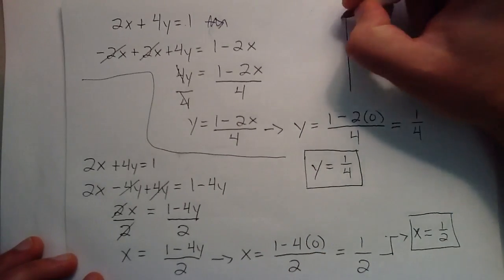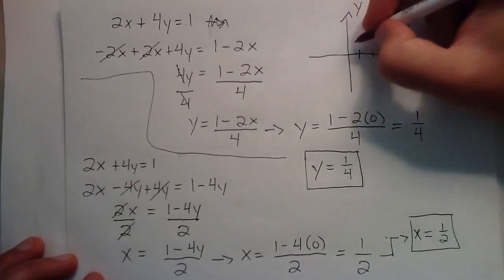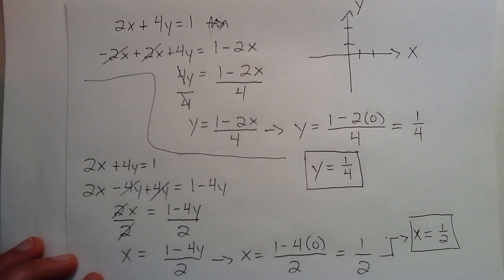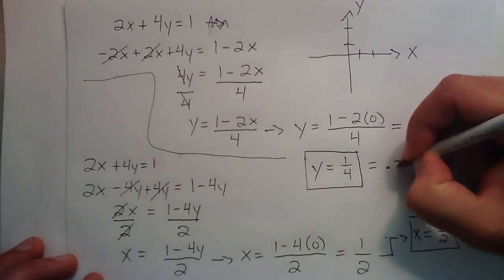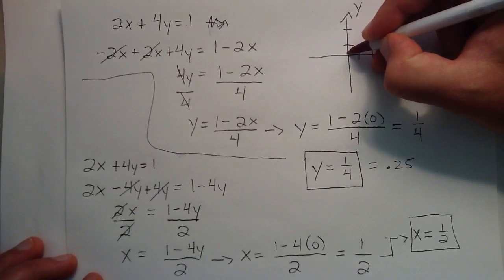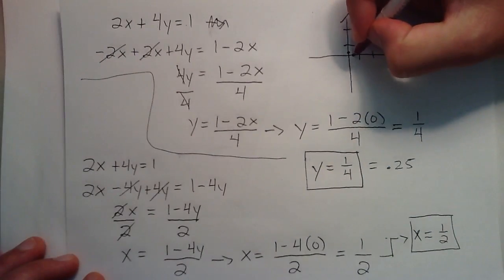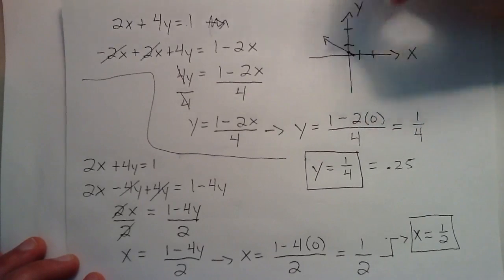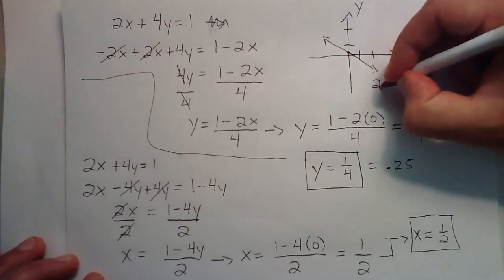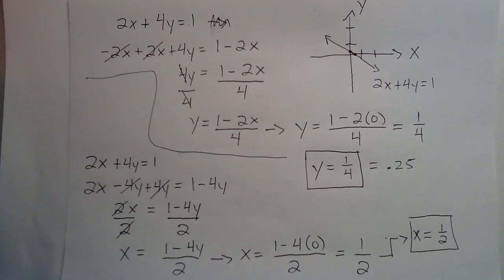To do a quick sketch: here's our y axis, here's our x axis. This is one unit, that's two units on each axis. y equals 1 fourth is 0.25, so it's just a little bit less than halfway up. And x equals 1 half would be right there. Connecting those two points gives you a rough sketch of the line 2x plus 4y equals 1. Anyway, that's how you find out where a line, or any function, crosses the x or y axis. Hopefully you've enjoyed this video tutorial. Thank you for watching, and don't forget to subscribe.